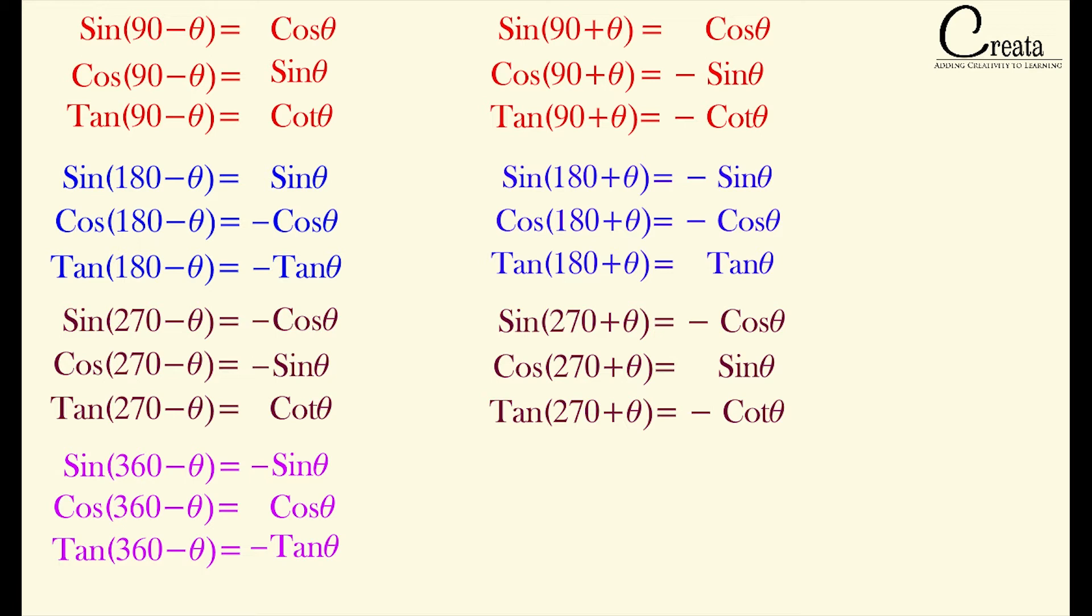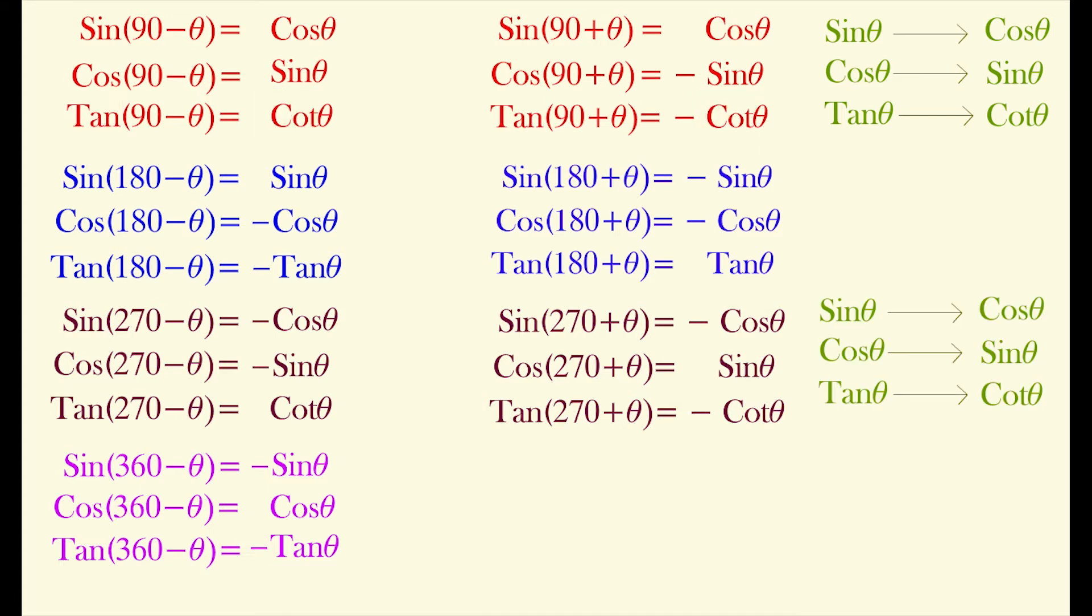If you observe in 90 plus theta and 90 minus theta cases, trigonometric ratios are changing their forms. Means sin is changing to cos, cos is changing to sin, and tan is changing to cot. Same thing is happening in case of 270 minus theta and 270 plus theta. But in case of 180 degree and 360 degree, there is no change in form of trigonometric ratios.